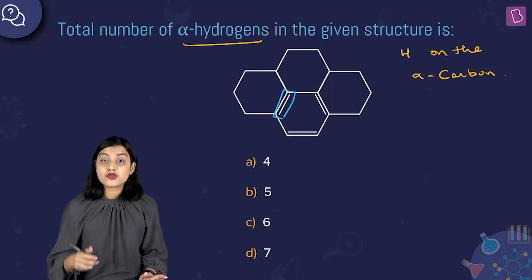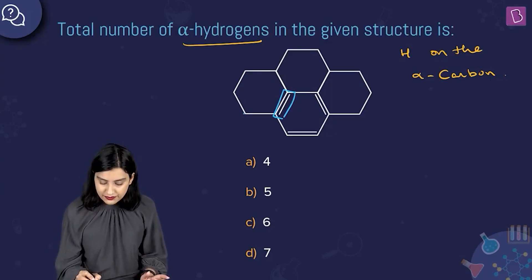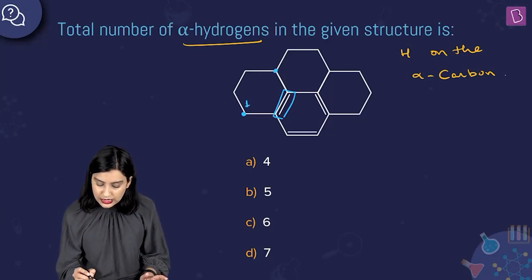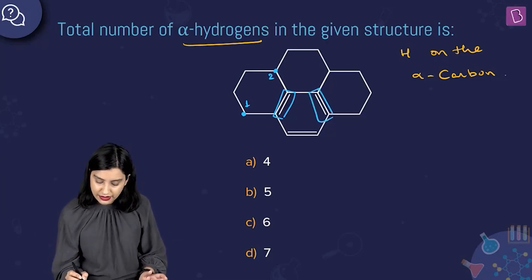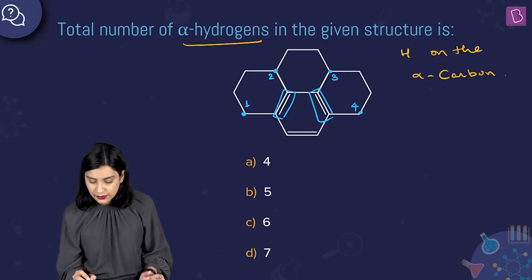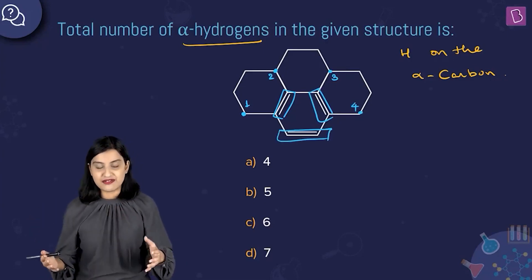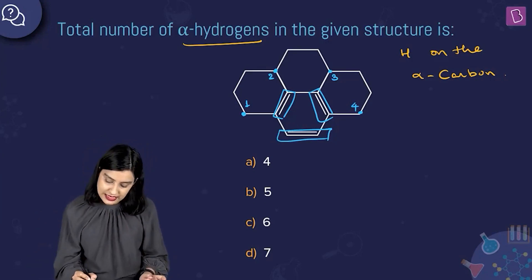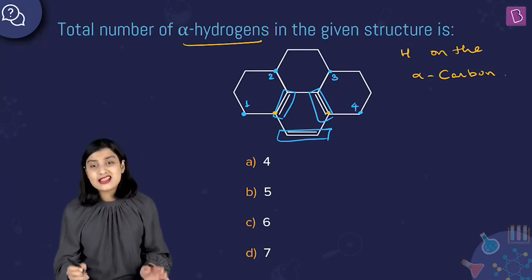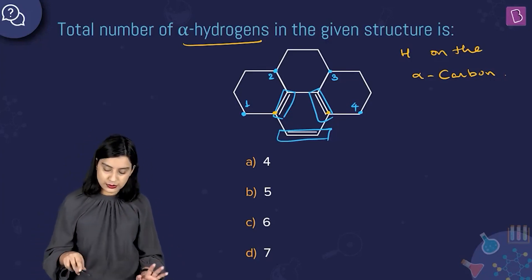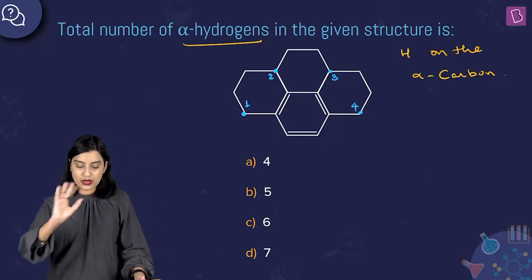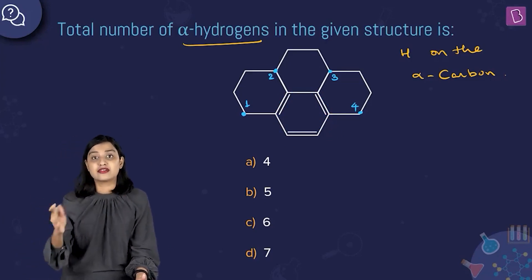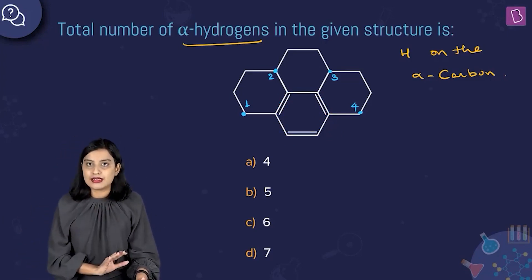Let's say I'm talking about this pi bond here. Adjacent to it you have carbon one and carbon two. Similarly, when you look at this pi bond, you have carbon three and carbon four. When you come to this pi bond, you don't need to consider additional alpha carbons because those carbons also carry the functional group themselves, so they will not be counted. So you have four alpha carbons: one, two, three, and four.